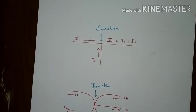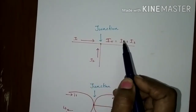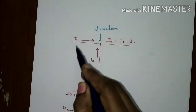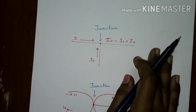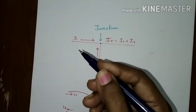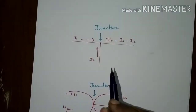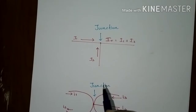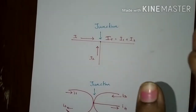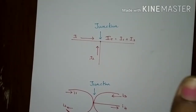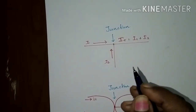Kirchhoff's current law deals with conservation of charge entering and leaving the junction. To determine the magnitude of electric current flowing around an electrical or electronic circuit, we need to use certain laws or rules that allow us to write down the currents in the form of an equation. The network equations used are those according to Kirchhoff's laws. As we are dealing with circuit elements, we will be looking at KCL — Kirchhoff's current law.